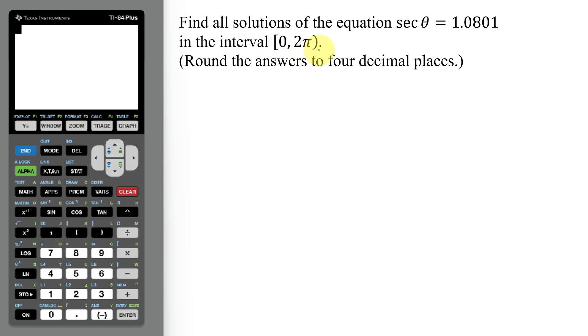As we're given the interval 0 to 2π, this tells me my answers have to be in radians. And as the value of the secant of theta is not a value on the unit circle, that tells me I'm going to need to use a calculator.